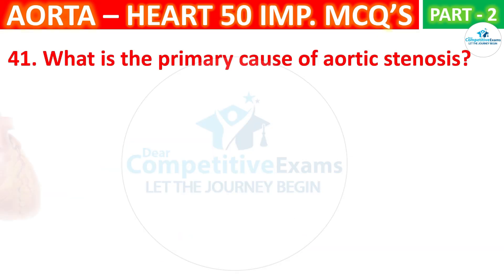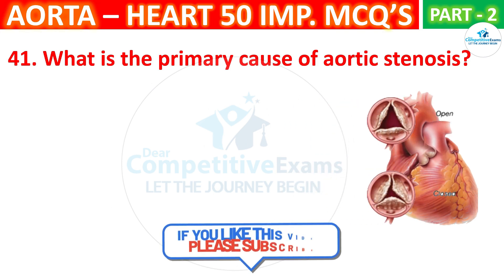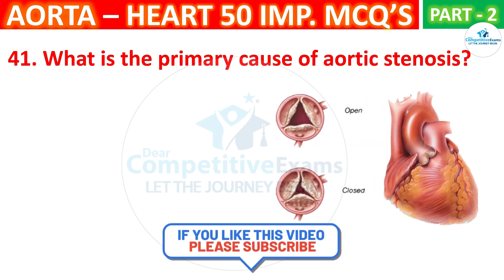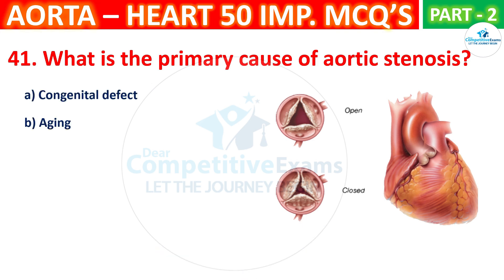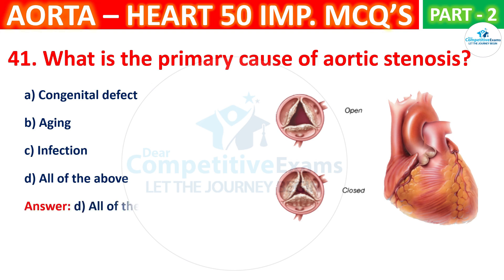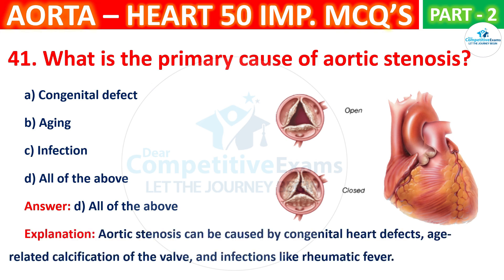Question No. 41. What is the primary cause of aortic stenosis? The options are: Congenital defect, Aging, Infection, or All of the above. The correct answer is D, that is all of the above. Aortic stenosis can be caused by congenital heart defects, age-related calcification of the valve, and infections like rheumatic fever.